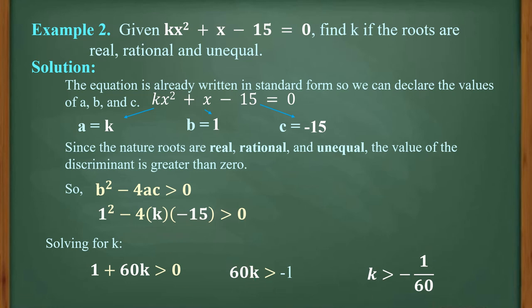Therefore, k is greater than negative 1 over 60. To solve, we divide both sides by 60, so k is greater than negative 1 over 60.